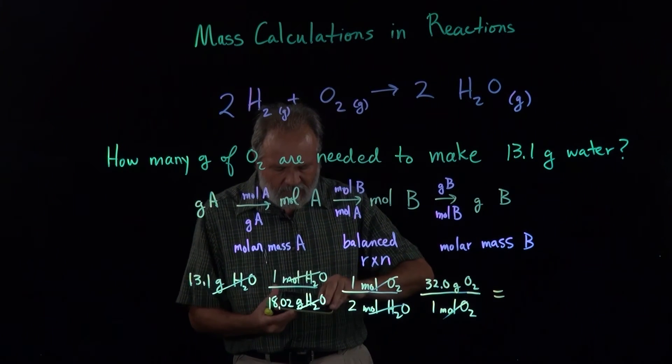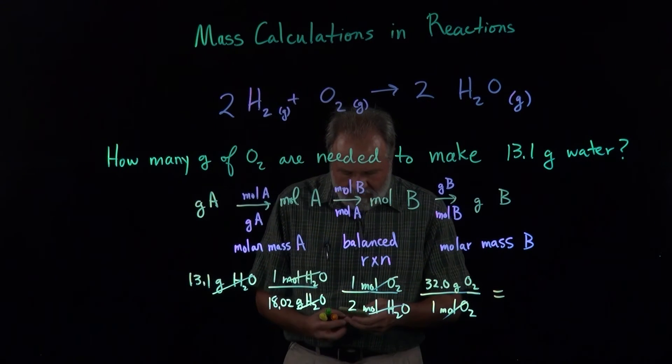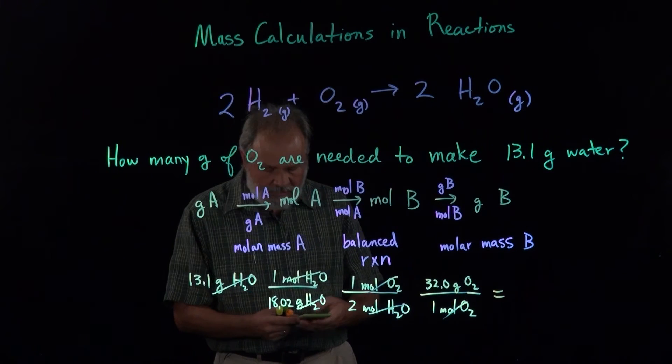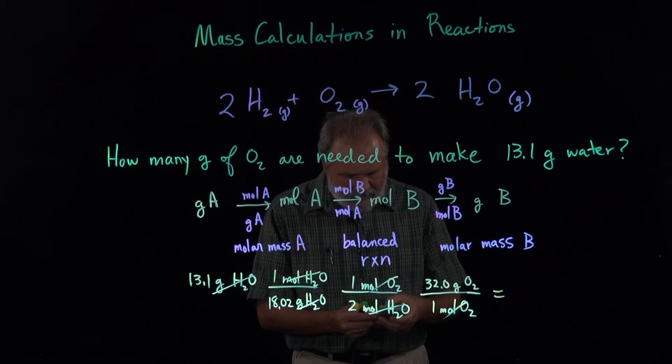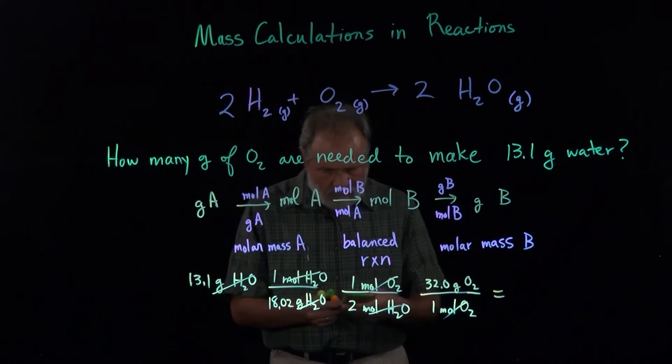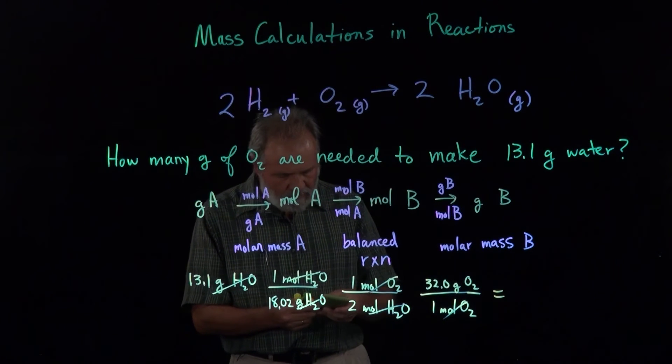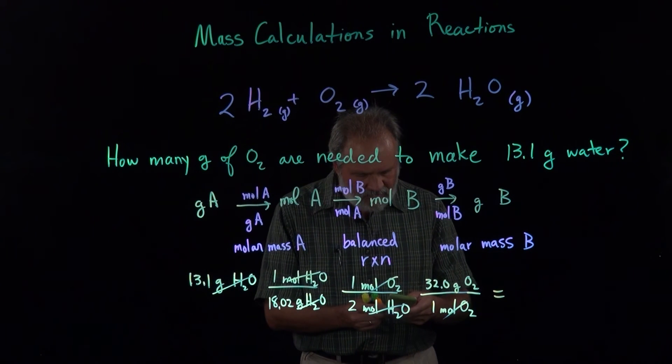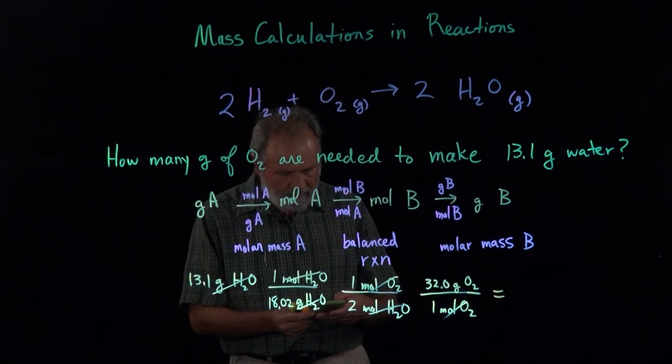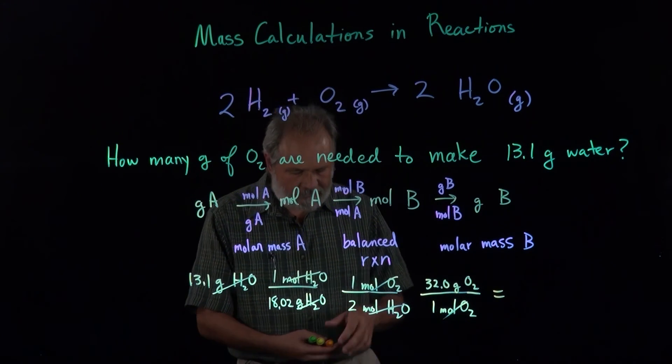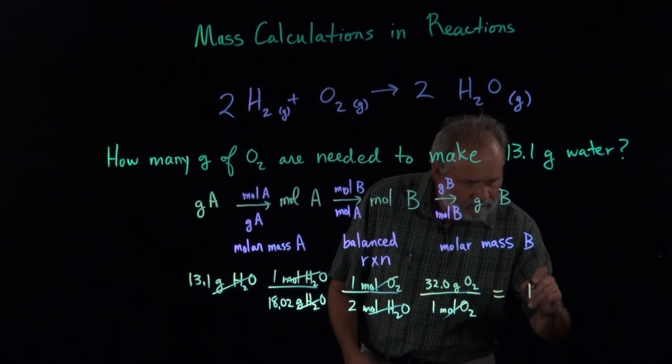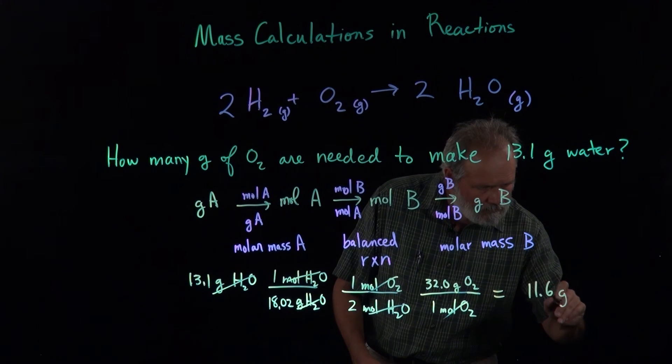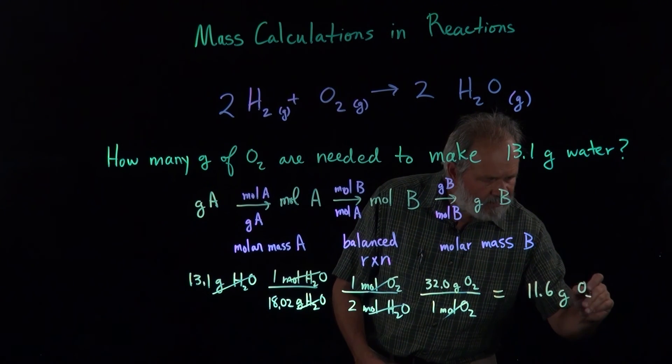And let's look and see what that number actually is. So 13.1 divided by 18.02 divided by 2 times 32, 11.6 grams of oxygen.